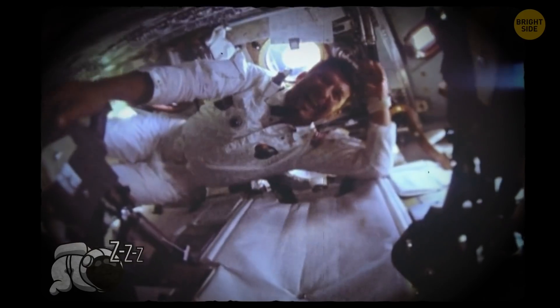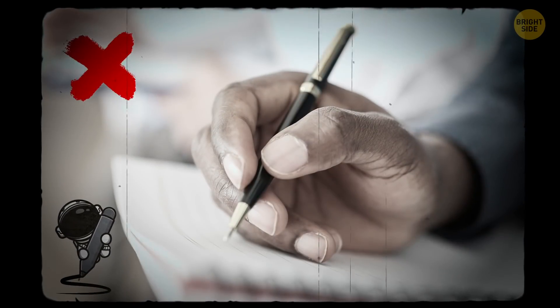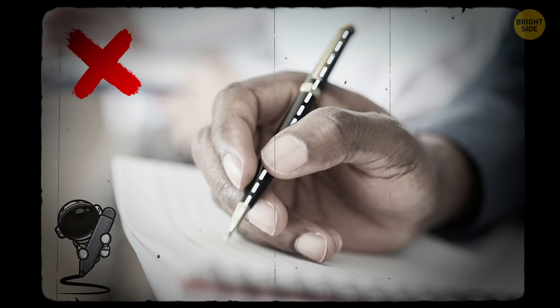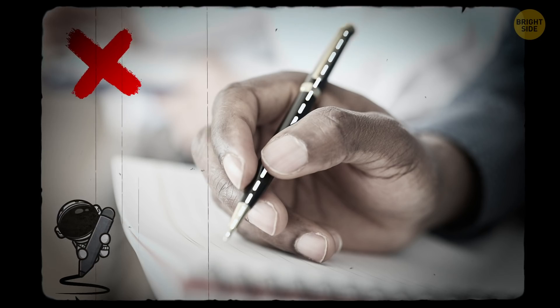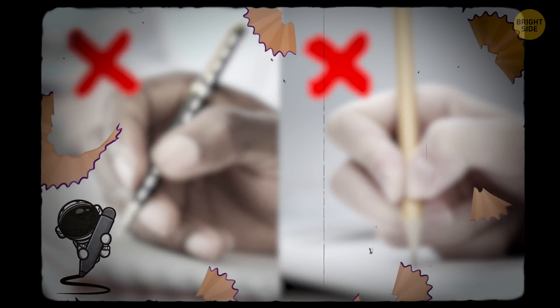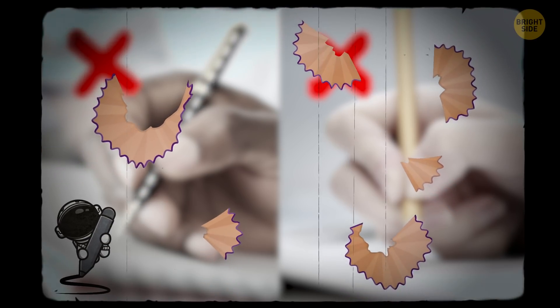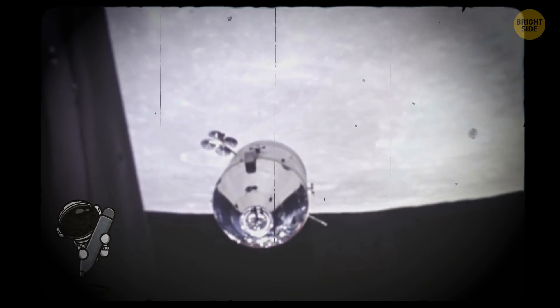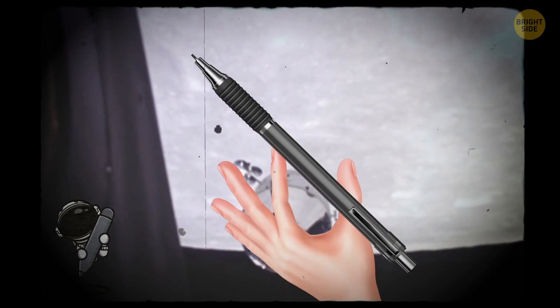A good old ballpoint pen is useless in space. To use it, ink should flow, which doesn't happen if there's no gravity. A simple pencil is a no-go either. Once you sharpen it, you gotta deal with all the mess left behind. When people just started exploring space back in the 60s, they would use mechanical pencils to make notes.